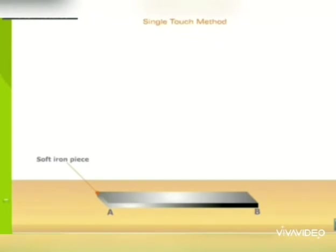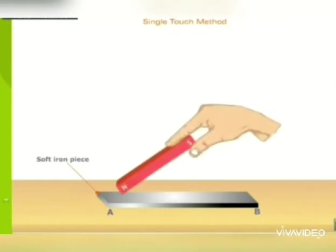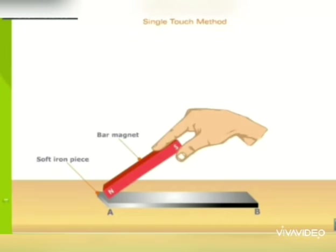Hold one end of the bar magnet in your hand and keep the other end of the bar magnet at one end A of the iron bar.